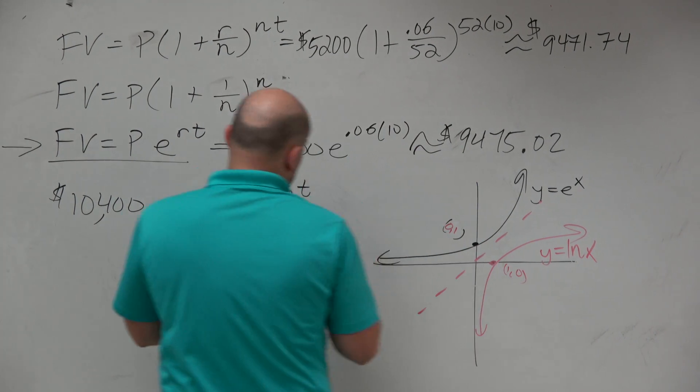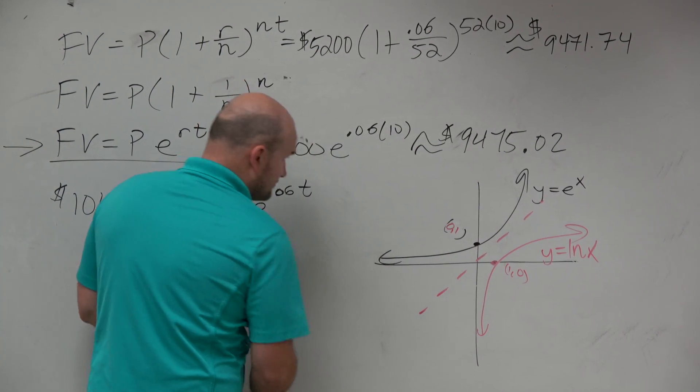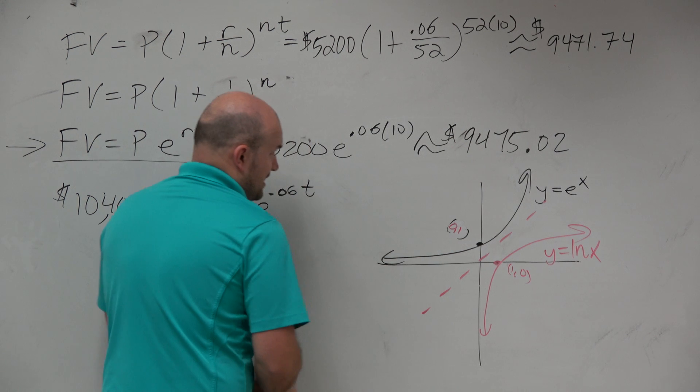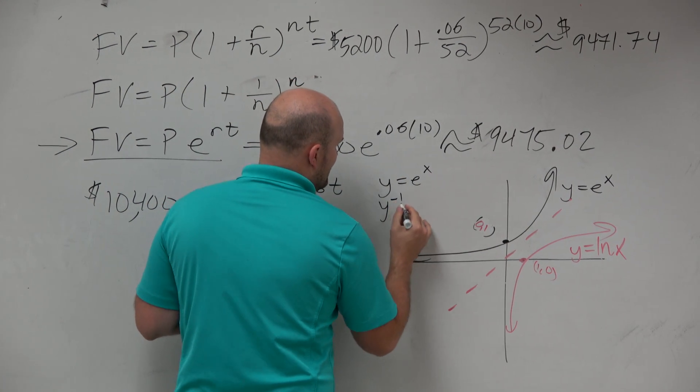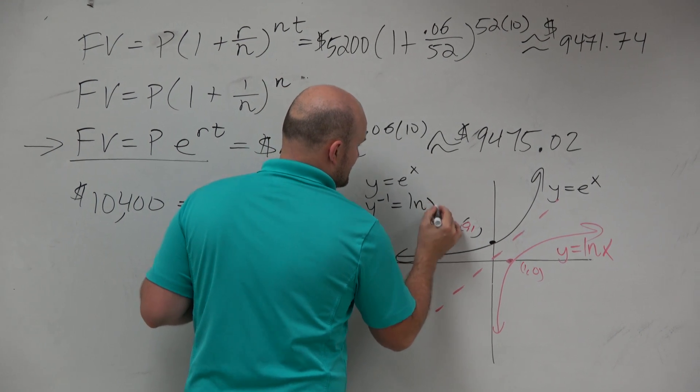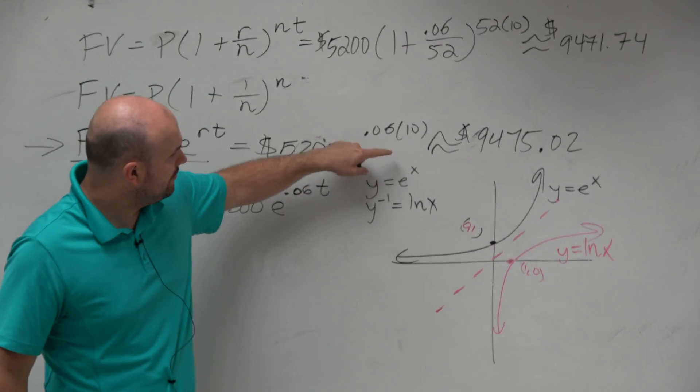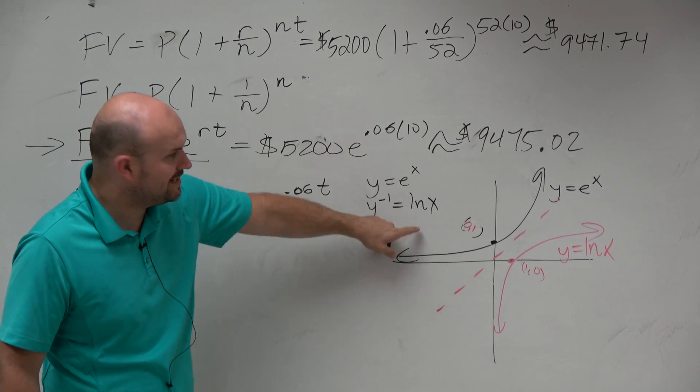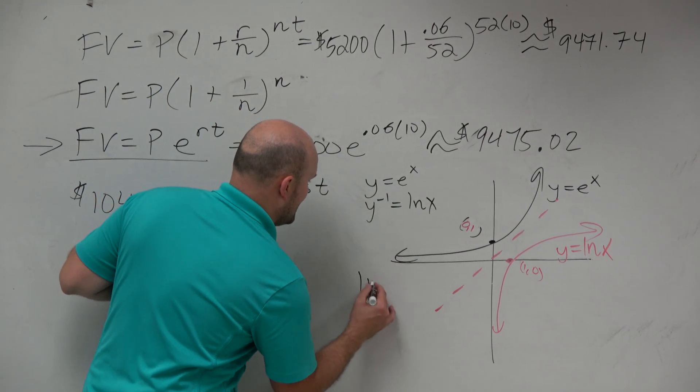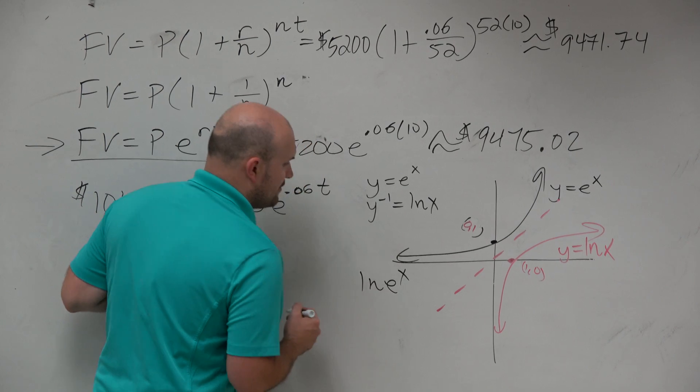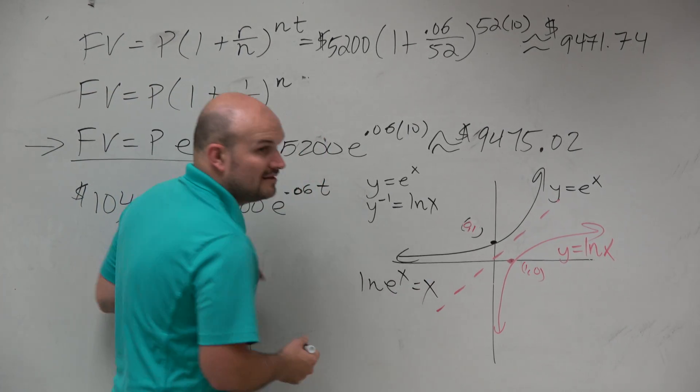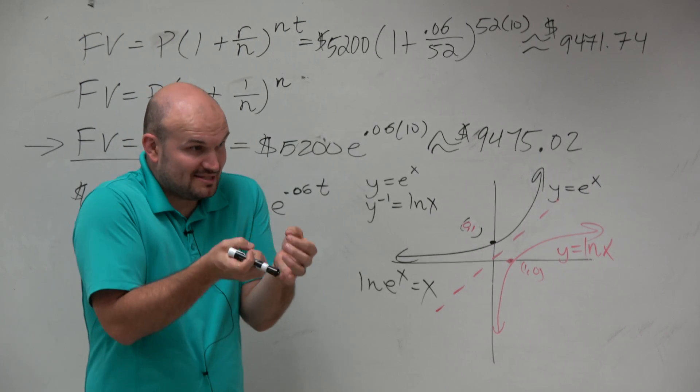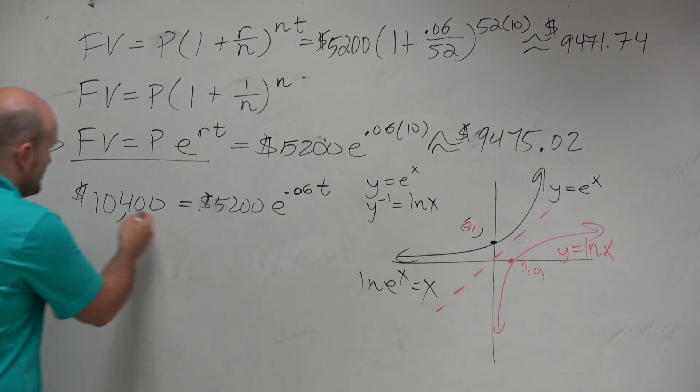X. So if I say y is equal to e to the x, and y inverse is equal to ln of x, what happens when I plug in my function into my inverse, when I plug in ln of e to the x? What am I going to get? I'm going to get x. And isn't that what we want? We want whatever is going to be isolated. So let's look over here.